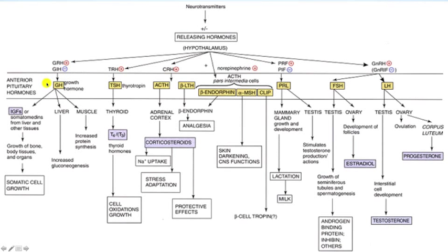Growth hormone was produced in the anterior pituitary gland by the acidophils, specifically the subgroup called somatotrophs. It was stimulated by growth hormone releasing hormone, produced in the arcuate nuclei, and inhibited by growth hormone inhibiting hormone, also known as somatostatin, which was produced in the paraventricular nuclei. Once released, growth hormone goes to many different tissues — one would be the muscles, where it increases protein synthesis.